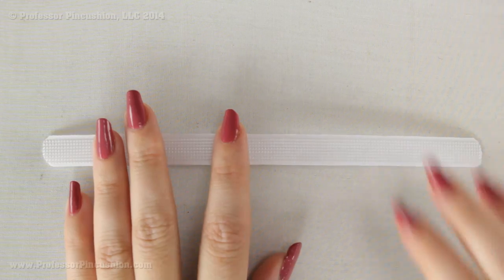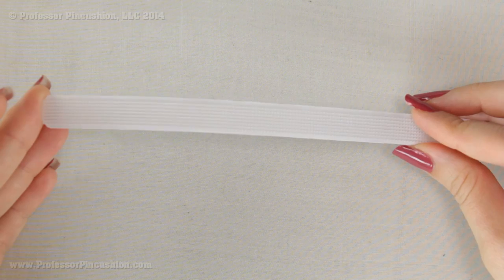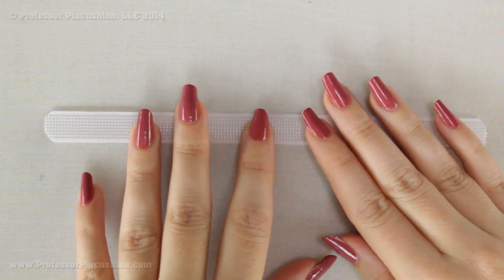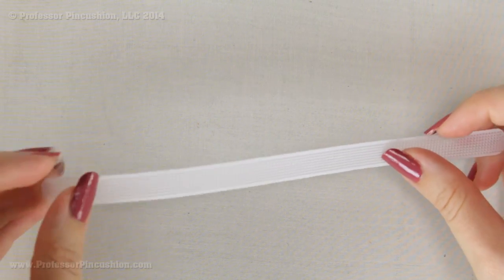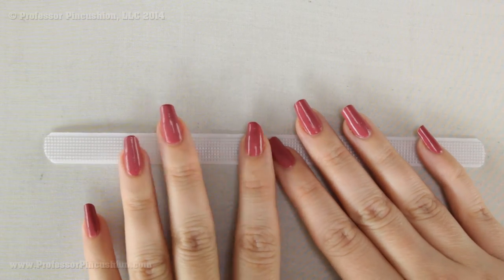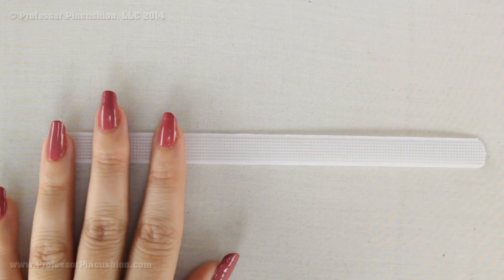Another thing you can do is you can take your boning, the plastic boning and you can put it into a bowl of really hot water. It'll do the same thing where it'll just warm it up so it'll make it a little bit more flexible and then you can do the same thing. Go ahead, take it out and place a really heavy book on it and then that should help.